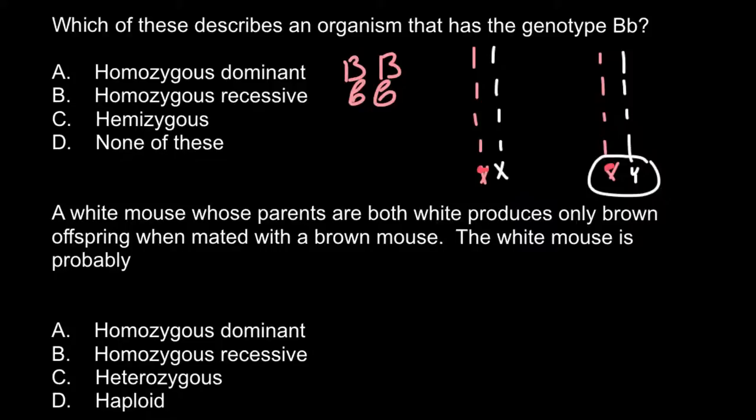So all the males would be hemizygous. So which answer to choose? Actually the correct answer would be answer D, none of the above. Because genotype that is capital B small b we call heterozygous. And this is not the same as hemizygous.